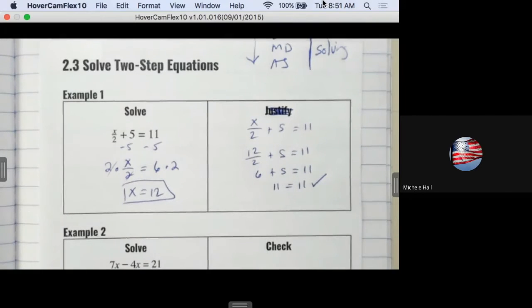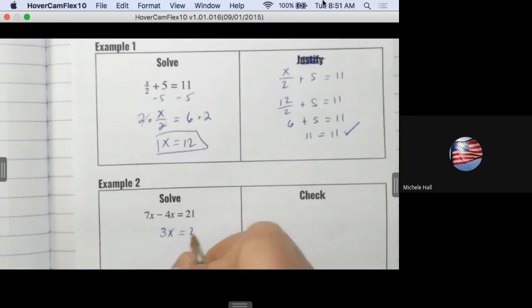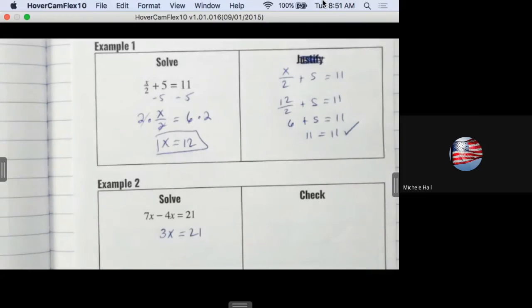Finish example two: 7x minus 4x equals 21. You're on the same side of the equation, so I can do exactly what it says - 7x minus 4x.